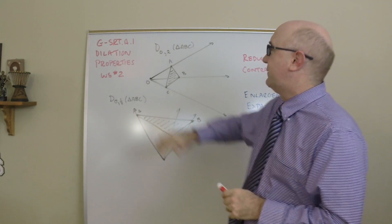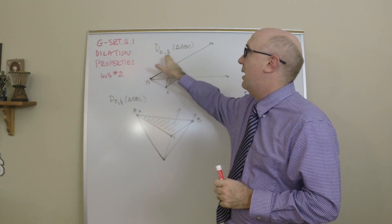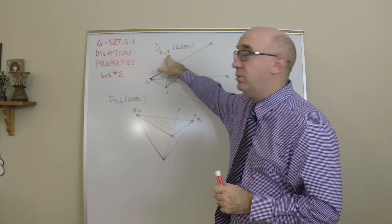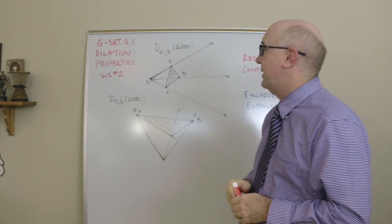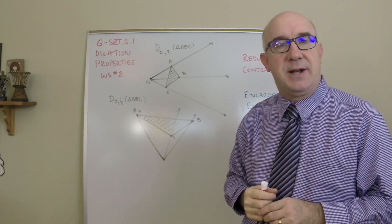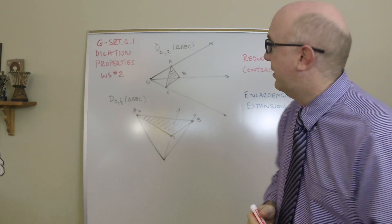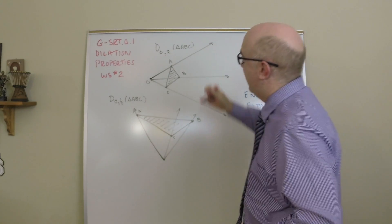So first of all, this for instance is our notation of dilation about O, a scale factor of 2, triangle ABC. Now a scale factor of 2 works the way we would expect it. If you multiply something by 2, it gets 2 times bigger. So I'm just going to rough it in, but basically, whatever that distance O to A is, A' would be here.